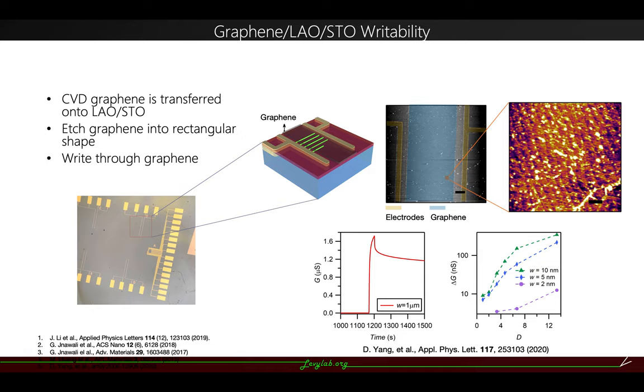Moreover, as I mentioned, these methods can integrate with the graphene LAO-STO. So here, we have CVD graphene transferred onto LAO-STO with wet transfer method. And we etched it into the rectangular shape in the middle of a pair of electrodes.